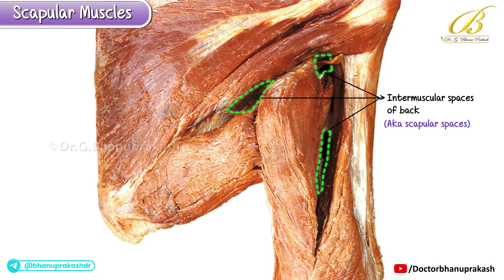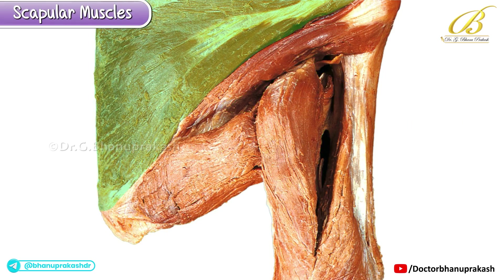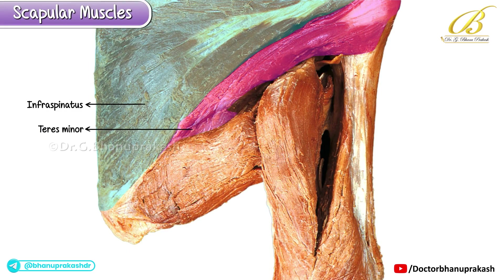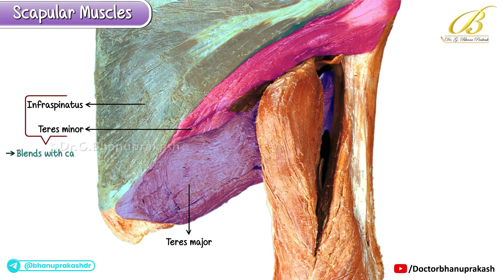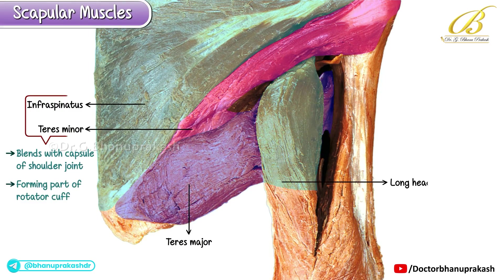Let's identify the key muscles. The medial muscle on the dorsal surface of the scapula is the infraspinatus. Along the lateral border of the scapula, two muscles are seen: the teres minor, arising from the upper part of the lateral border, and the teres major, originating below it. The teres minor, along with the infraspinatus, blends with the capsule of the shoulder joint, forming part of the rotator cuff. The teres major passes anterior to the long head of the triceps to insert onto the shaft of the humerus.